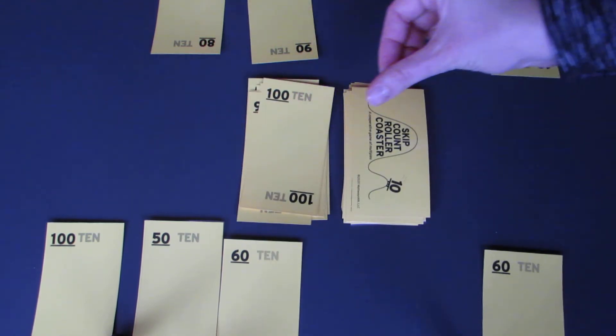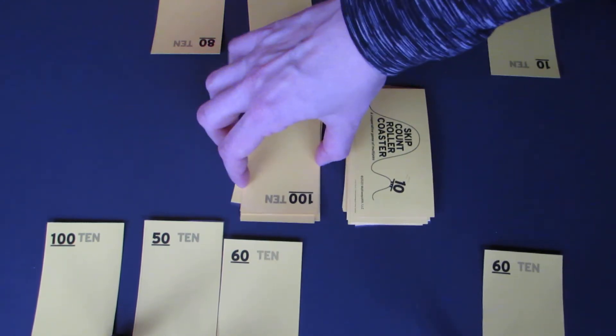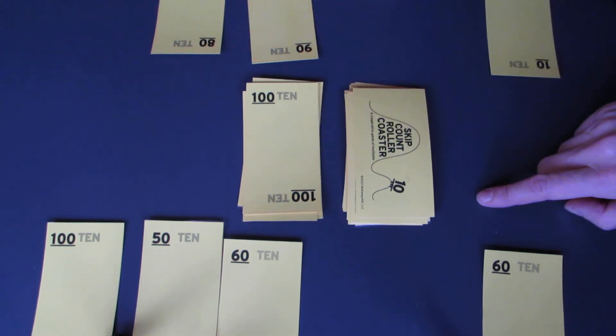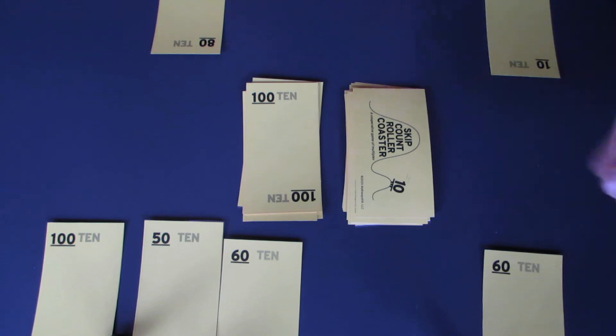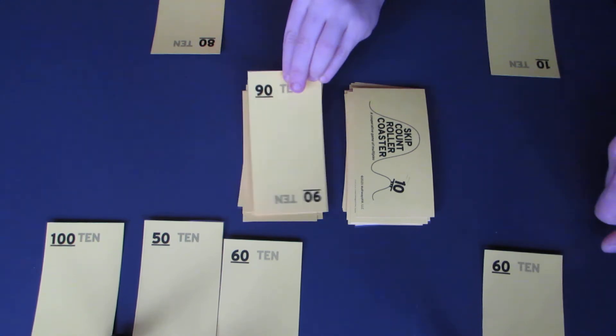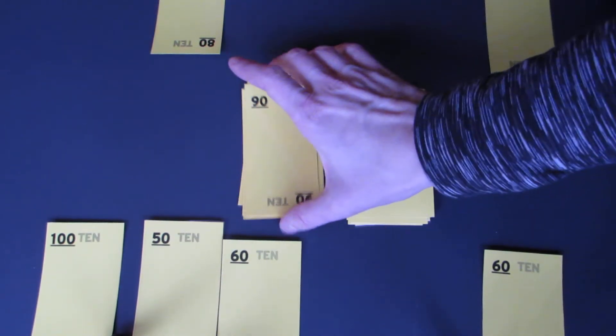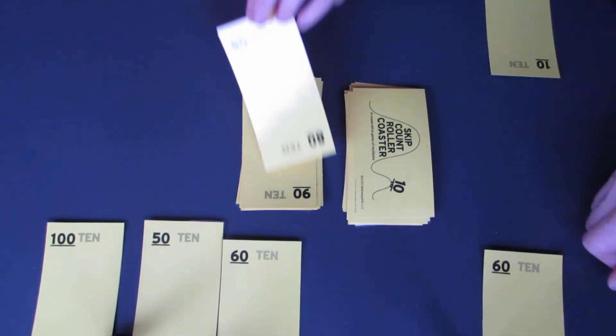Now we've gone up, but 100 is the highest we can go. So now we have to go back down. Do we have a 90 to go next to it? Hey, I have another 90. Play a 90. Now we can go up again to 100, or we can go down to 80. Which one do you think we should do? 80. Okay, play 80.